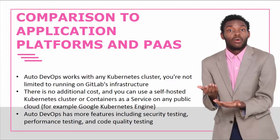Comparing Auto DevOps to application platforms and Platform as a Service: Auto DevOps works with any Kubernetes cluster, so you're not limited to running on GitLab's infrastructure. In previous lectures, we set up a Kubernetes cluster, created Ubuntu instances, installed GitLab, and demonstrated the integration. There's no additional cost, and you can use a self-hosted Kubernetes cluster or containers as a service on any public cloud — in this course I'm using Google Kubernetes Engine. Auto DevOps also includes security testing, performance testing, and code quality testing.